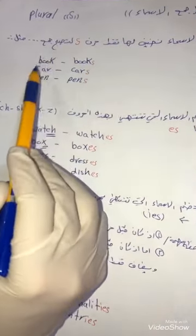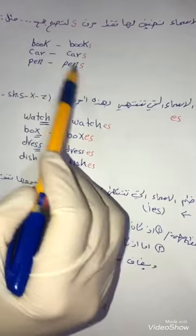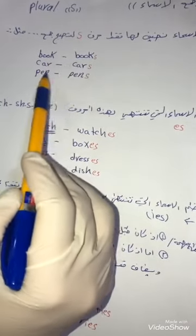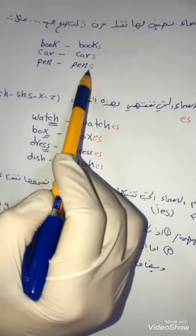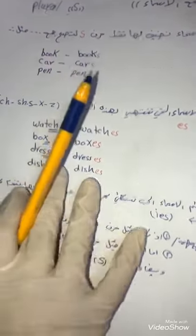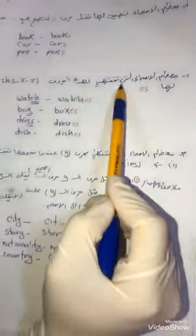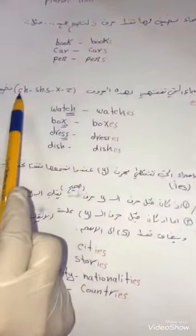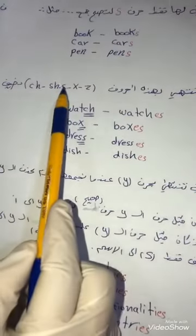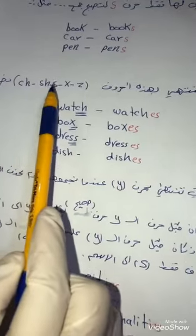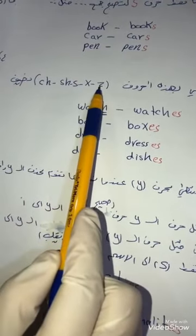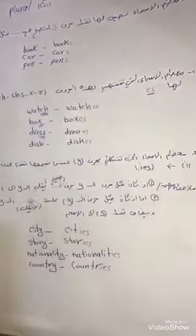For example: cars - car + S. This is what we call adding S - this means two or more. All words that end with the letters C, H, S, X, Z -